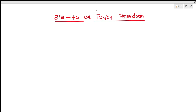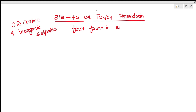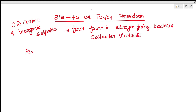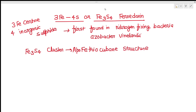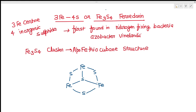The second type of ferredoxin is the 3Fe4S or Fe3S4 type. This means there are three iron centers and four inorganic sulfides. It was first found in the nitrogen-fixing bacterium Azotobacter vinelandii. The Fe3S4 cluster has an apo-thiocubane structure — three iron atoms are arranged with inorganic sulfide groups between them, and the three iron atoms are also attached to the sulfur atoms of cysteine residues.